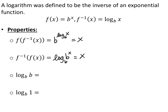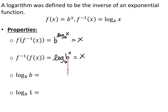Similarly, if I compose f inverse with f of x, every time I see x in log base b of x, I replace it with b to the x. So I get log base b of b to the x. When I compose inverses it simplifies down to x, so those two cancel each other out. Whenever I have log base b of the same base then raised to a power, those cancel and you're left with whatever is that exponent.